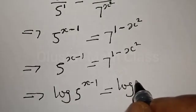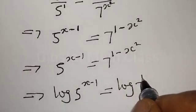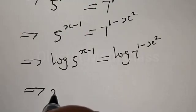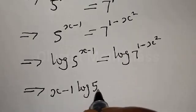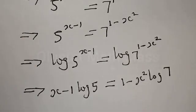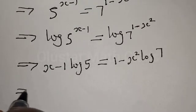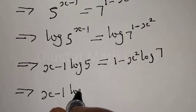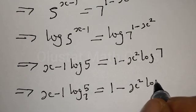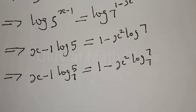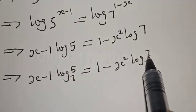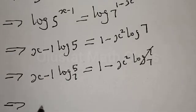This implies that x minus 1 times log 5 will be equal to 1 minus x squared times log 7. This implies that we have x minus 1 times log 5 base 7 equal to 1 minus x squared times log 7 base 7. Since log 7 base 7 is equal to 1, this simplifies further.